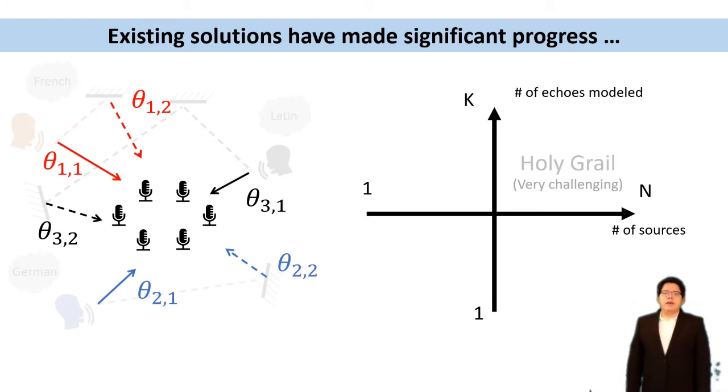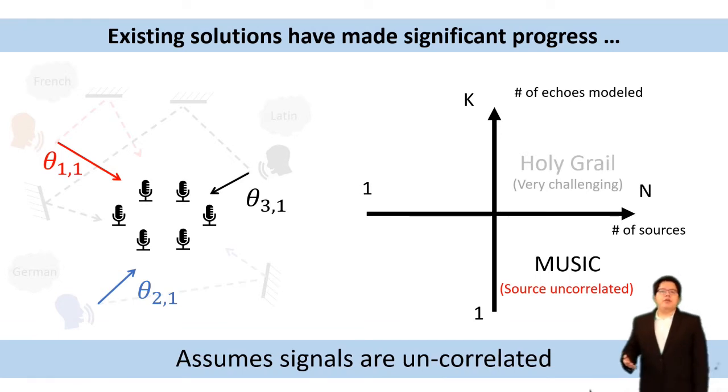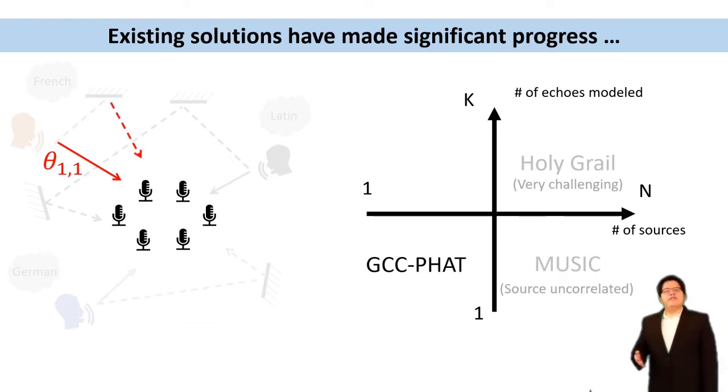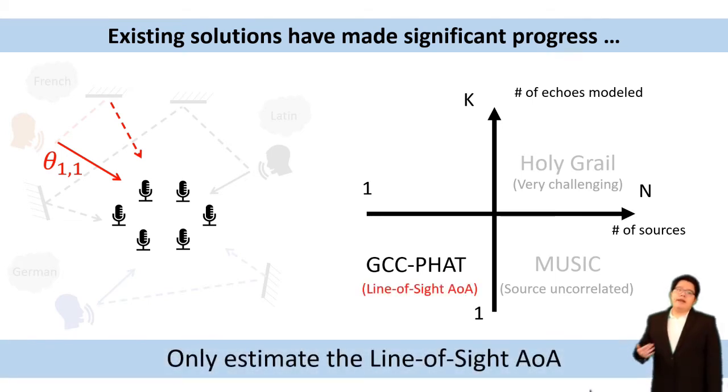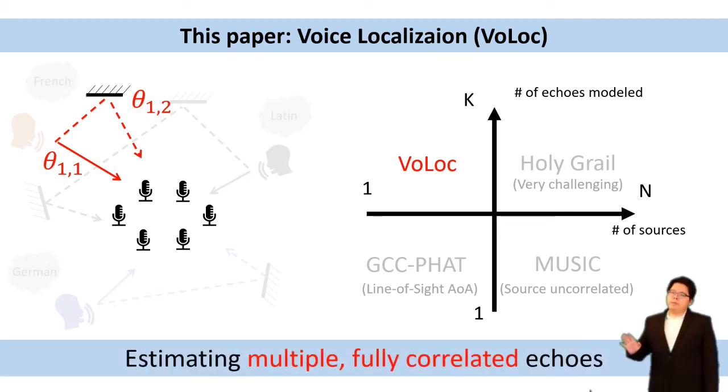Existing solutions have made significant progress. For example, MUSIC algorithm can estimate the AOA of many source signals, but it assumes all the signals to be uncorrelated. GCC-PHAT algorithm can estimate the direct path AOA quite well even if there are many echoes, but it can only estimate the line of sight angle of arrival. Our work, Volock, targets to estimate all AOA of the echoes. In other words, we want to model multiple fully correlated echoes.